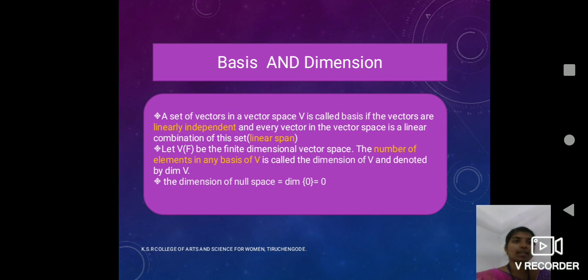Basis and dimension. A set of vectors in a vector space V is called a basis if the vectors are linearly independent and every vector in the vector space is a linear combination of this set. First of all, basis means it satisfies two conditions: linearly independent and linear span. Next definition is dimension. Let the vector space V over the field F be the finite dimension vector space. Then the number of elements in any basis of V is called the dimension of V and it is denoted by dimension of V. So dimension means number of elements in a basis.